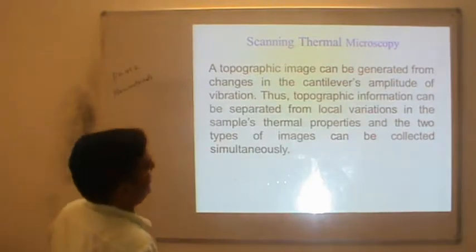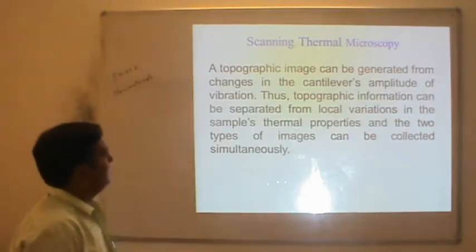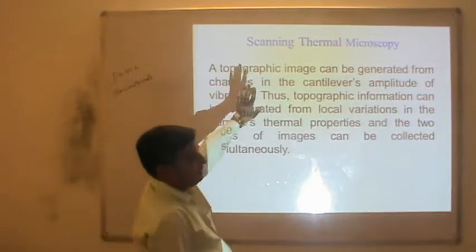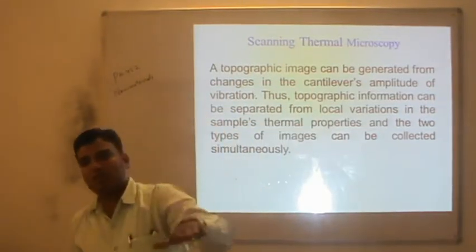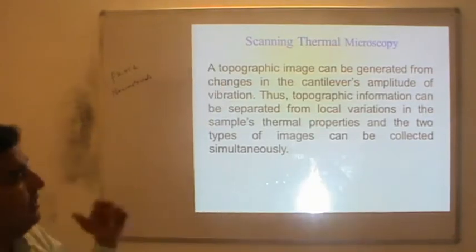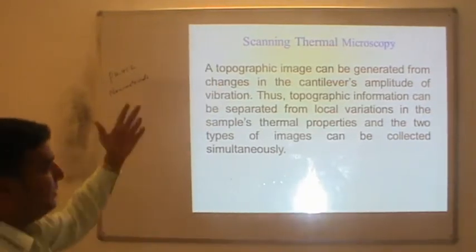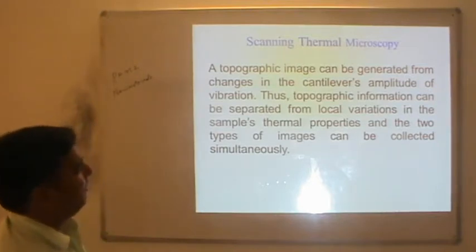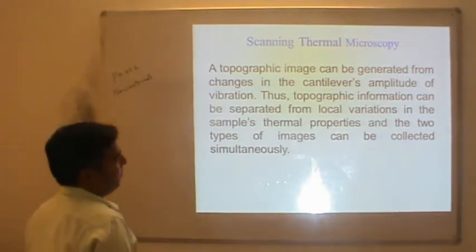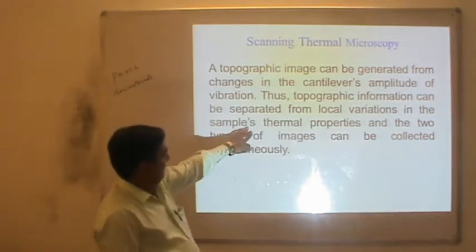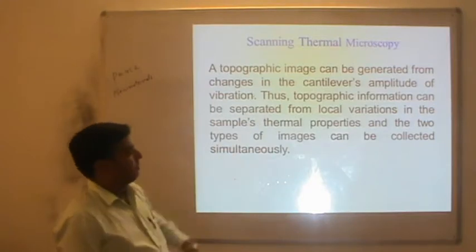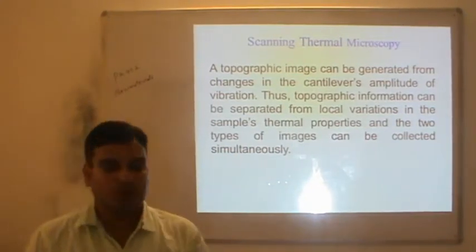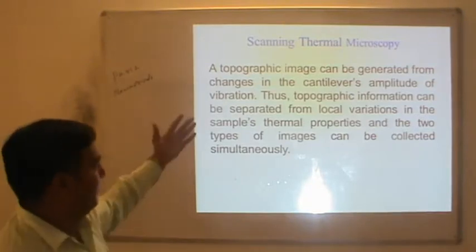A topographic image can be generated from changes in the cantilever's amplitude of vibrations — when it scans the surface, vibrations are observed and preserved as a topographic image of the sample. Topographic information can be separated from local thermal variations in the sample. Thus two types of images can be collected simultaneously: a topographic image and a thermal image.